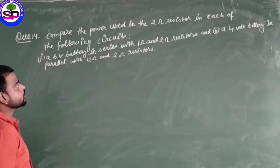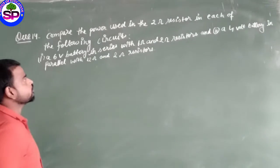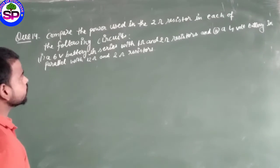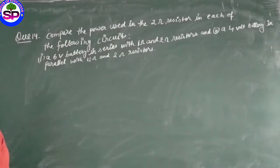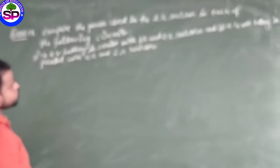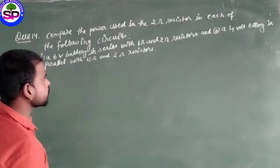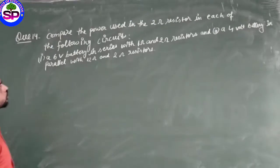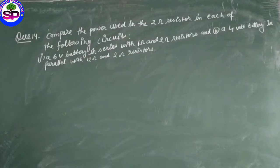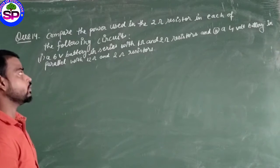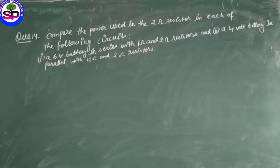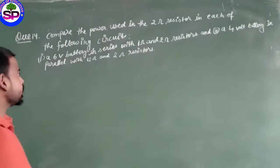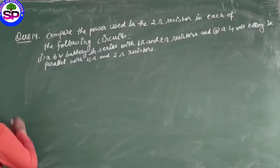Next problem on electric current: Compare the power used in the 2 ohm resistor in each of the following. A 6 volt battery in series with 1 ohm and 2 ohm resistors. There are 1 ohm and 2 ohm resistors with a 6 volt battery, so we need to compare the power.